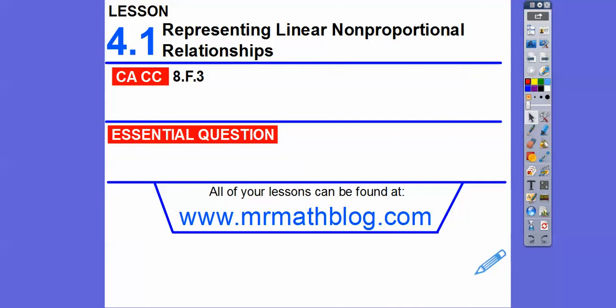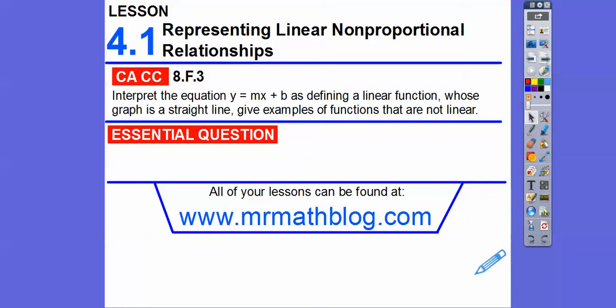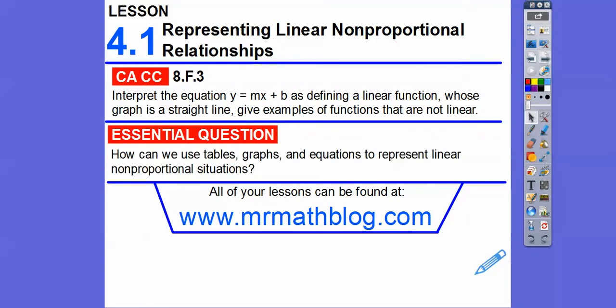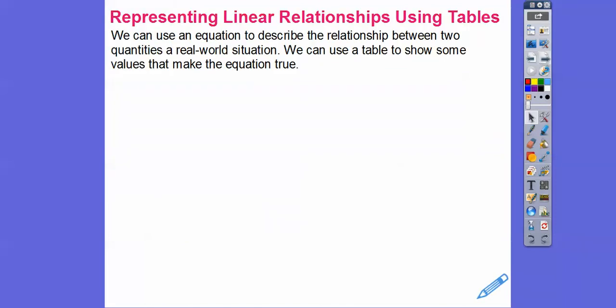Hey folks, this lesson is on representing linear non-proportional relationships. We've done linear proportional relationships — non-proportional just means it doesn't go through the origin. It's still linear, still makes a line. Linear means a line. So our question is: how can we use tables, graphs, and equations to represent linear equations that are non-proportional? That just means they don't go through the origin.